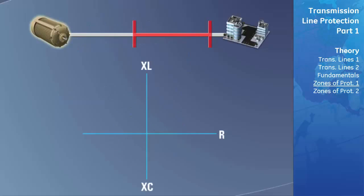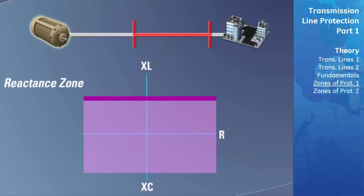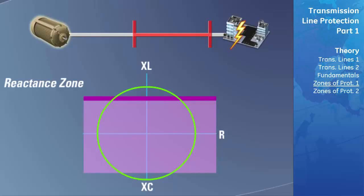The zone of protection known as a reactance zone is used to detect when the impedance of the fault has a very high resistive component. If the fault does have a high resistive impedance, this indicates that there is a load on the transmission line and the fault is most likely not on the transmission line. This type of zone is usually never used to trip a transmission line on its own but is normally used to supervise another distance zone of protection. For example, if an impedance zone detected an impedance entering its zone due to an external fault, the reactance zone can block the impedance zone from tripping because it can determine that the impedance is mostly resistive.